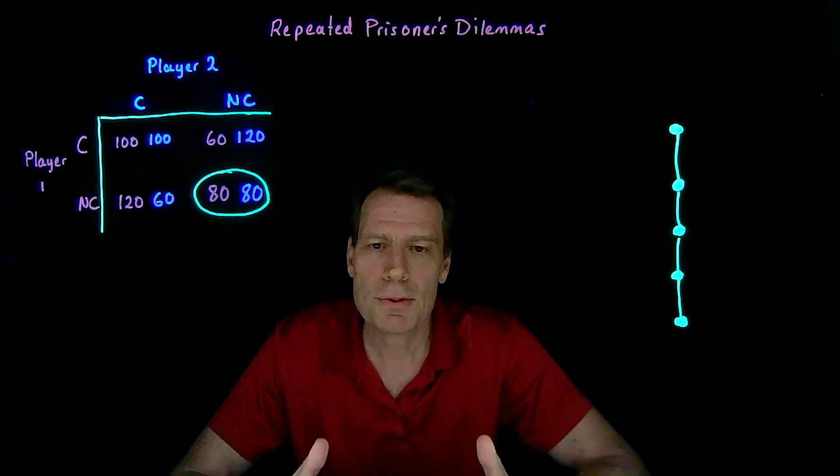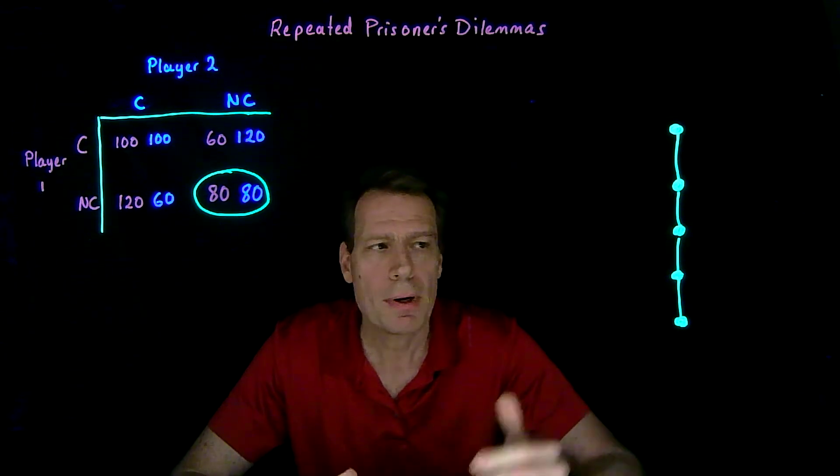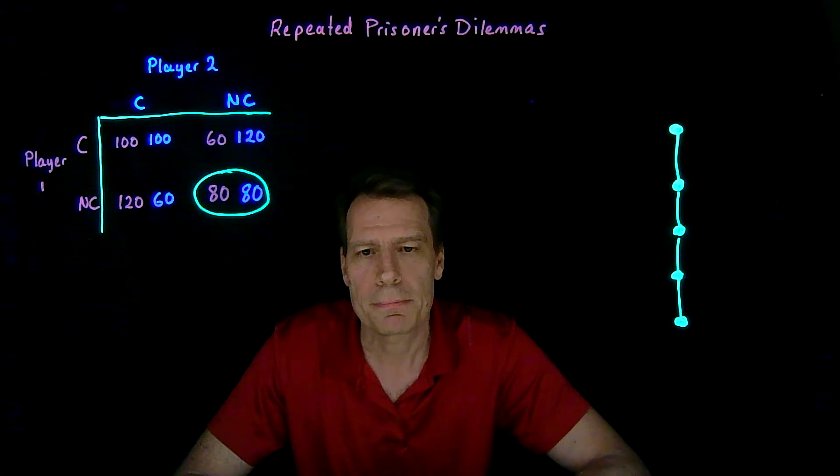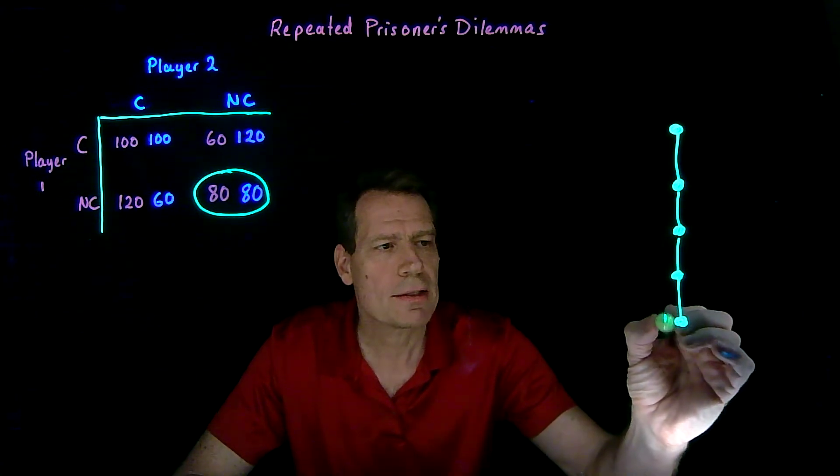Well, as in any sequential game, we'd want to solve that game from the bottom up to find the sub-game perfect Nash equilibrium. So we'd start at this final stage.